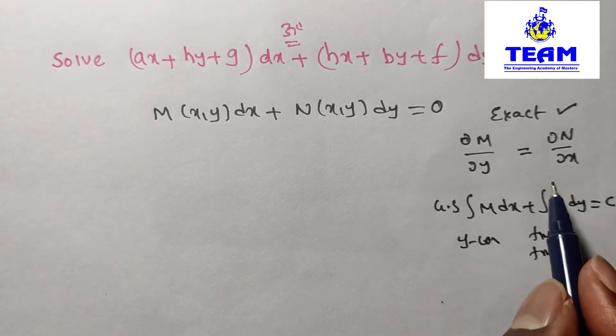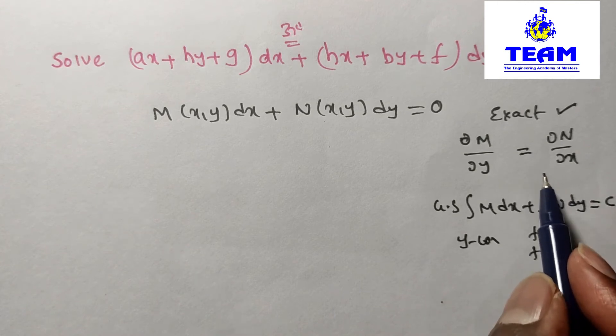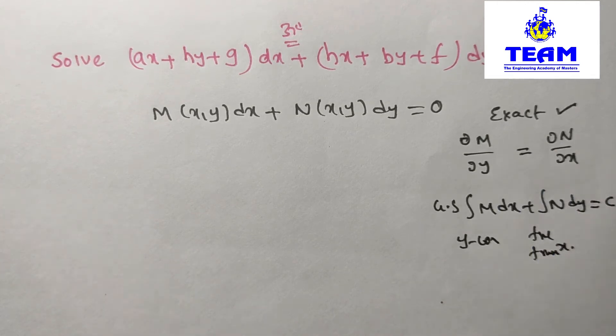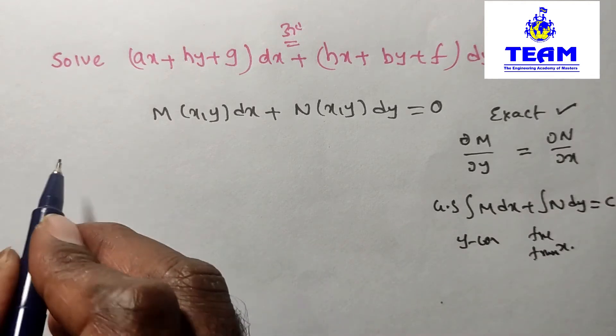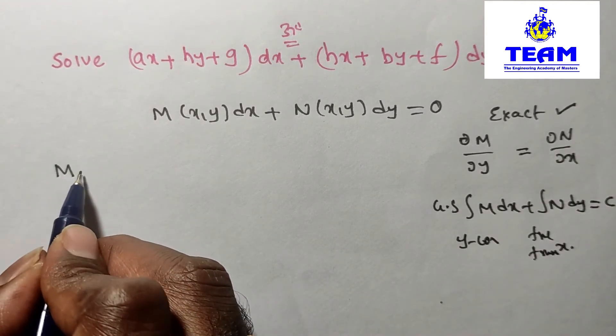If it is non-exact, we have different methods. When can we say non-exact? When ∂M/∂y is not equal to ∂N/∂x. So first for the given problem we need to separate the M and N values.